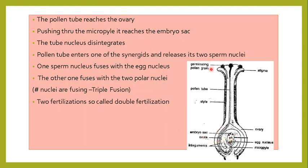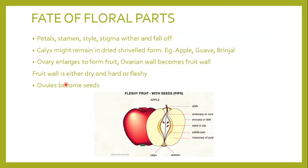This diagram can very well come in the exam — learn the one in your textbook. Once fertilization has taken place, the ovary develops into the fruit, and the ovules develop into the seed.